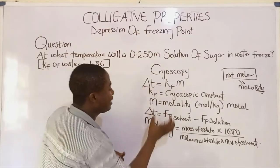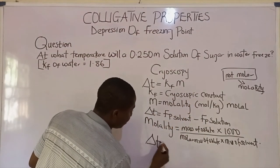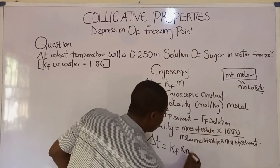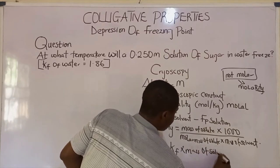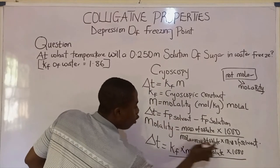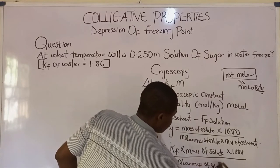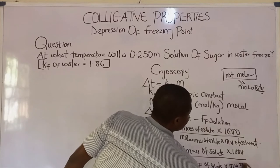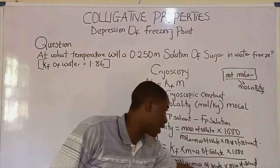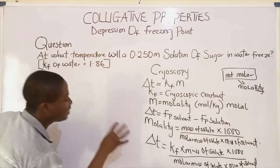Let's substitute this formula into the main equation. So delta t becomes Kf times molality, which is Kf times mass of solute times 1,000, all over molar mass of solute times mass of solvent. A solution is made up of a solute and a solvent.